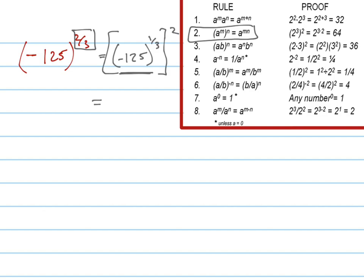What times itself three times equals negative 125? Negative five. Because positive five to the third is 125, so negative five to the third is negative 125. And so it's that squared.